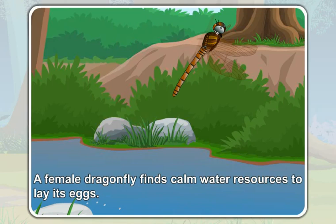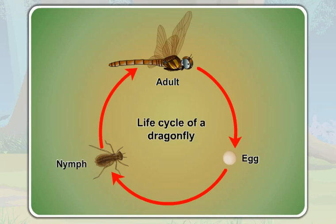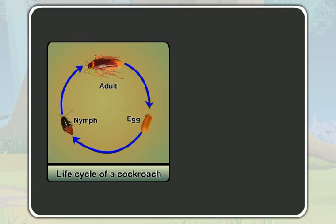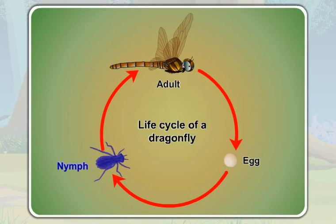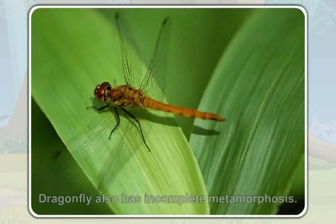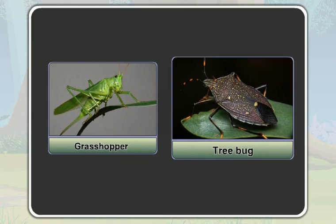And the life cycle begins all over again. So, like a cockroach, a dragonfly too has three stages in its life cycle: the egg, the nymph, and the adult. It also has incomplete metamorphosis. Insects like a grasshopper and a tree bug also have incomplete metamorphosis.